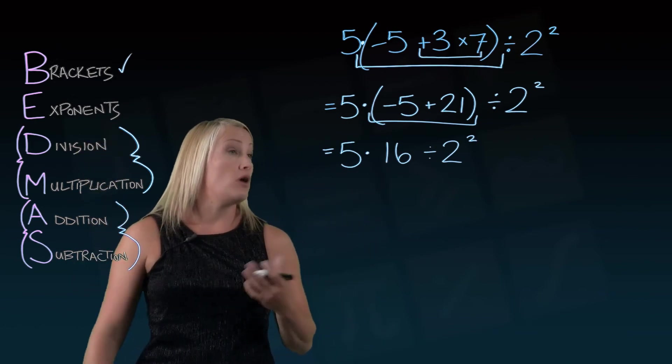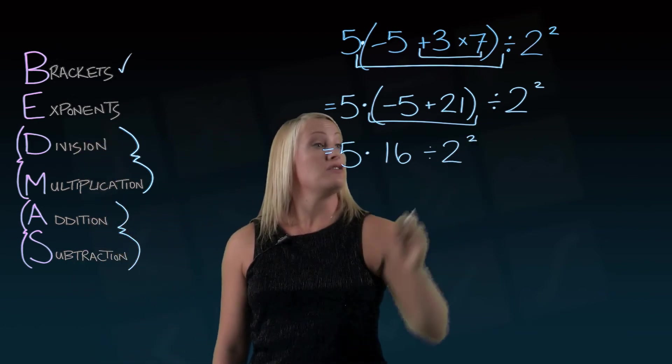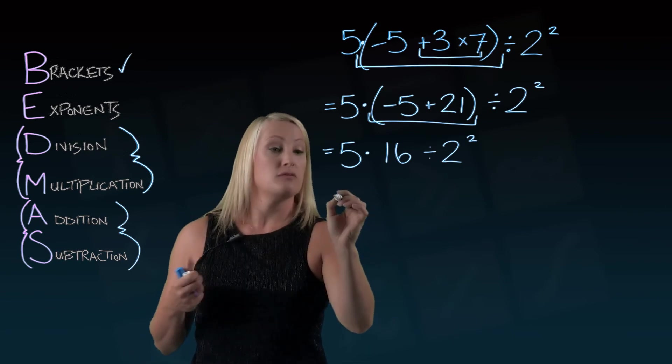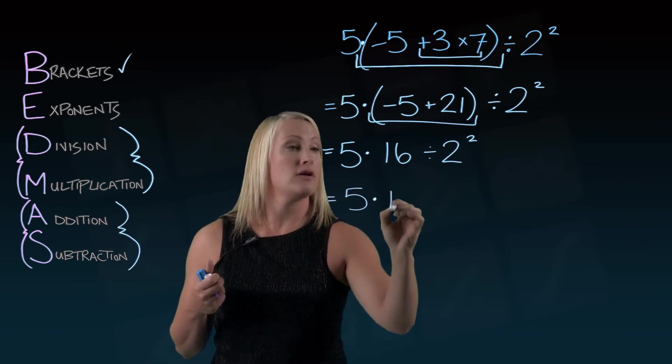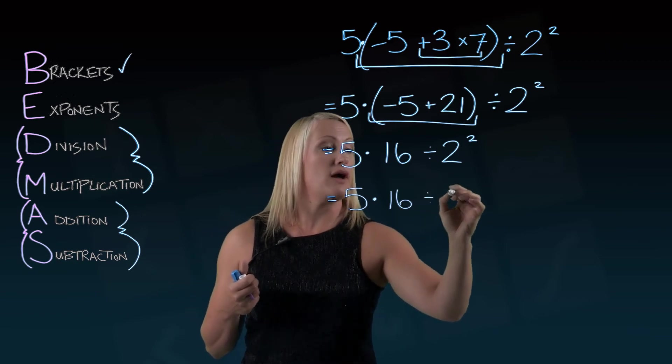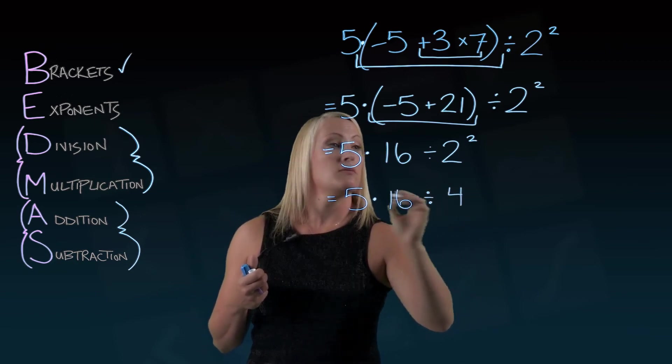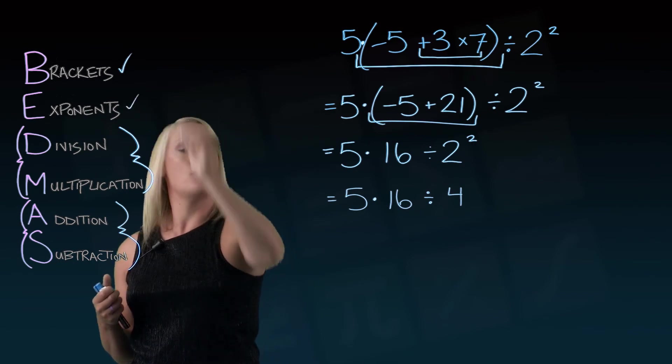Now I'm going to deal with exponents if there are any and it looks like there is. I've got 2 to the power of 2 which we know is 2 times itself twice. So I've got 5 times 16 divided by 4.